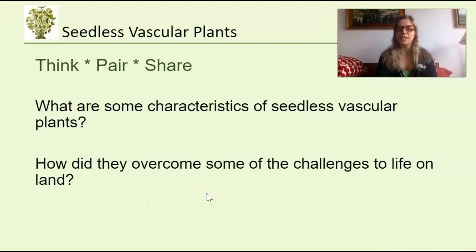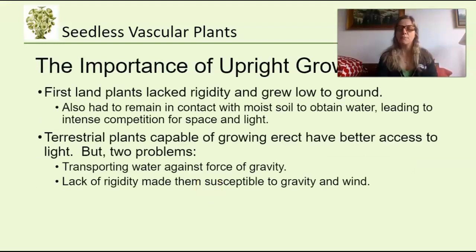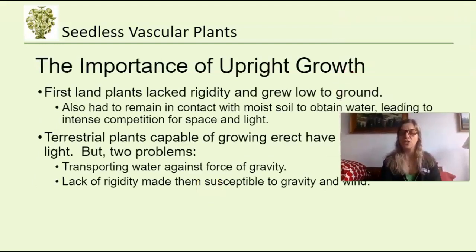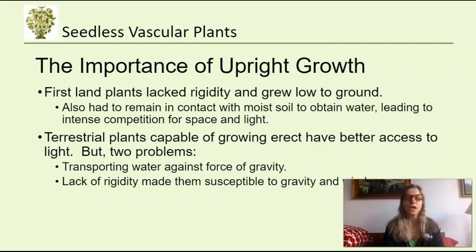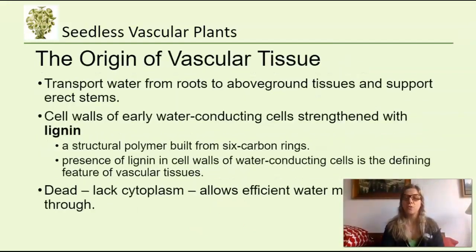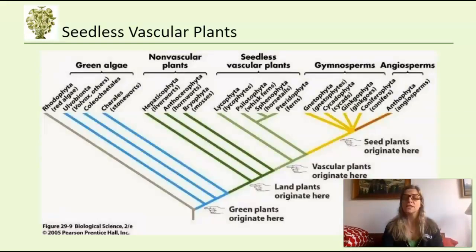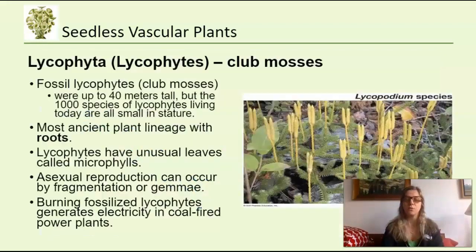Think about the characteristics of seed and vascular plants, and what adaptations allowed vascular plants to overcome challenges and move to life on land — including the importance of upright growth and what they achieve by growing upright. Also think about the origin of vascular tissue and which groups on the phylogeny have vascular tissue.